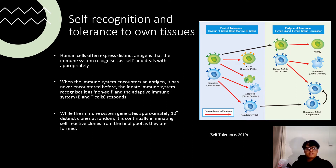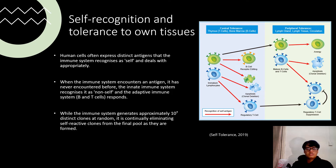Human cells often express distinct antigens that the immune system recognizes as self and deals with appropriately. When the immune system encounters an antigen on the surface of a red blood cell, it will not attack or signal for attack since this antigen is identified as self. When the immune system encounters an antigen it has never encountered before, the innate immune system recognizes it as non-self, and the adaptive immune system's B and T cells respond.